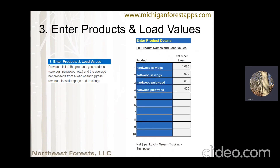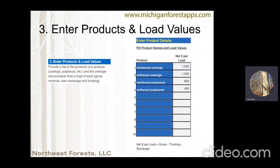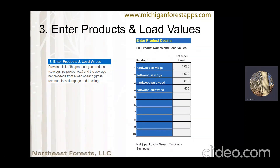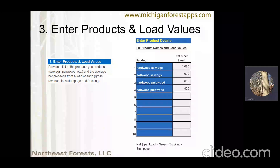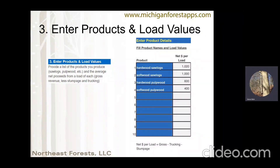In the third step, you're going to enter the types of products you produce by the truckload. A simple list might include hardwood saw logs, softwood saw logs, hardwood pulpwood, and softwood pulpwood. You'll put in the net revenue per load — not gross revenue, but net of any stumpage you have paid and any trucking charges. We just want to know the revenue you're taking in after those things are paid.